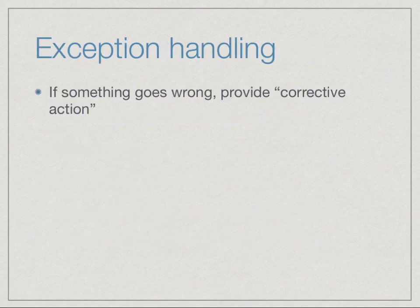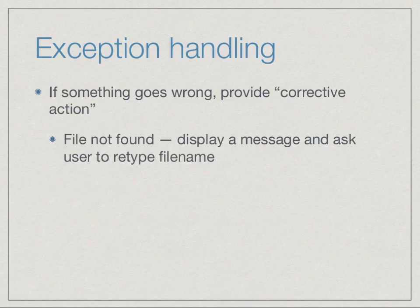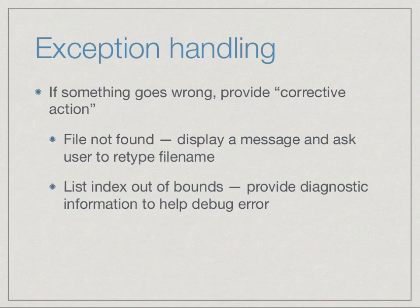Exception handling asks: when something goes wrong, how do we provide corrective action? The type of corrective action could depend on what type of error it is. If we are trying to read a file and the file does not exist, perhaps we had asked the user to type a file name, so we could display a message and ask the user to retype the file name. On the other hand, if a list is being indexed out of bounds, there is probably an error in our program and we might want to print out the value of the index to try and diagnose what's going wrong. So sometimes the error handling might just be debugging our error-prone program.